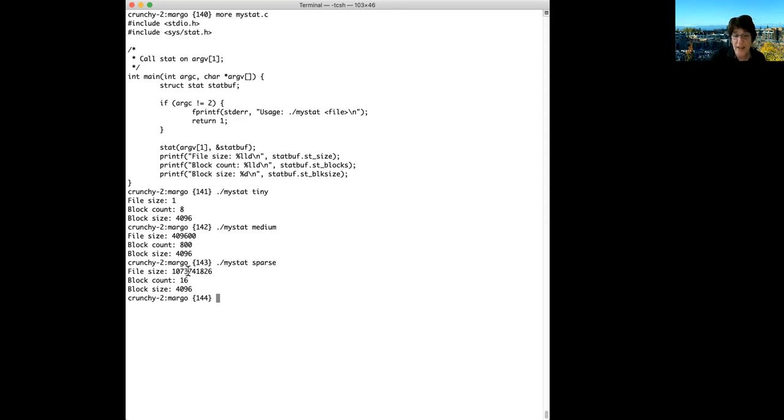But let's see what happens when we call my stat on sparse. Here's where we see that the file size is huge. Now the block count is 16. What does that mean? A block count of 8 would be one 4k block, and a block count of 16 says I have two 4k blocks. I've allocated one block at the very beginning of the file and one block at the very end. All that space in between that you can read and get zeros from is actually not allocated, so it's not consuming disk space.